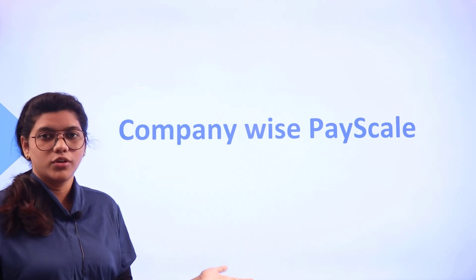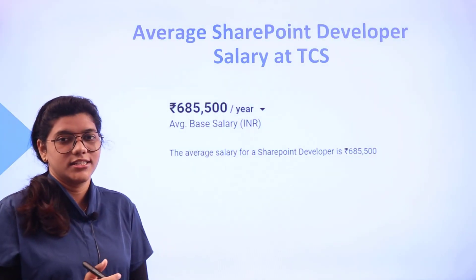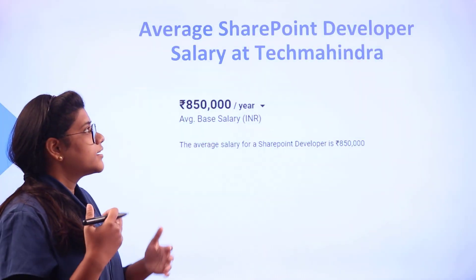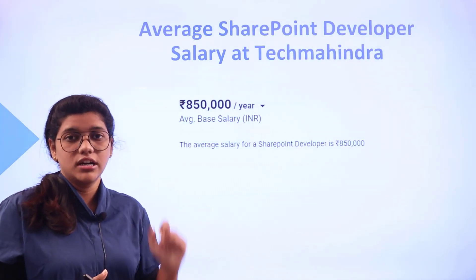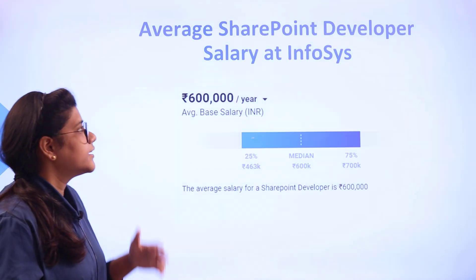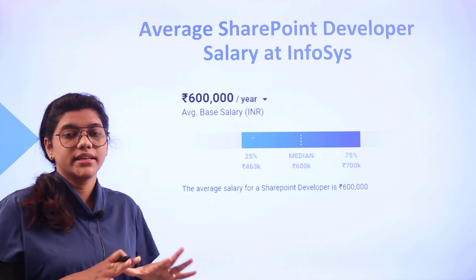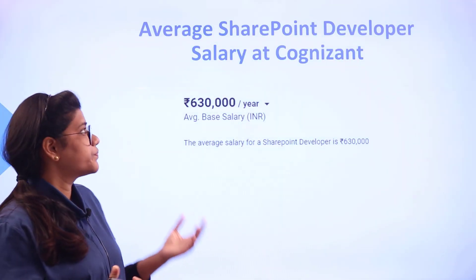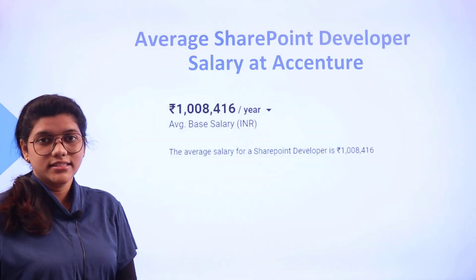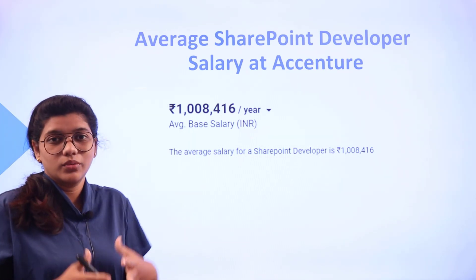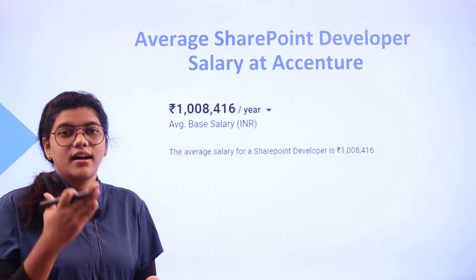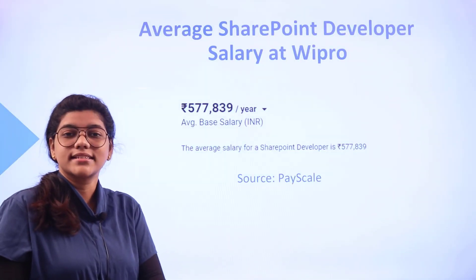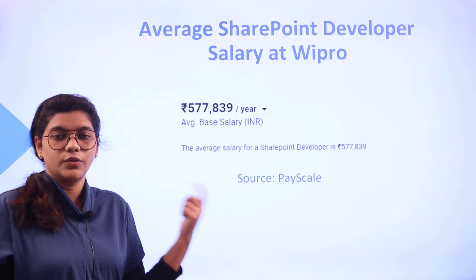Looking at company-wise pay: TCS pays ₹6,85,000 per annum, which is a good start. Tech Mahindra pays ₹8,50,000 — the highest range among mid-tier companies. Infosys pays ₹6,00,000 per annum. Cognizant pays ₹6,30,000 per annum. Accenture pays ₹10,00,000 per annum, which is the highest paid. Wipro pays ₹5,77,000, close to the average. All figures are on an average basis.